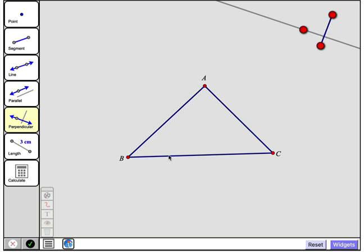I would like BC to be the base of my triangle's altitude. So I will tap BC to attach this glowing segment to it. And I would like my altitude to pass through point A, so I'll tap point A to attach this glowing point to it.